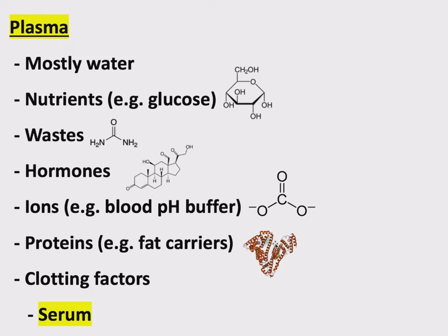Getting a little bit bigger: proteins, including fat carriers and many other proteins. In fact, some hormones are proteins. But again, these are definitely much smaller than a cell — proteins are part of the plasma. And then clotting factors — this is another protein we'll talk about a little bit when we talk about clotting.